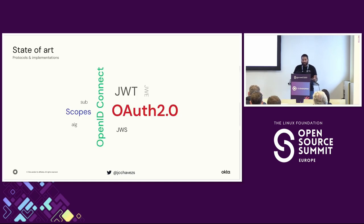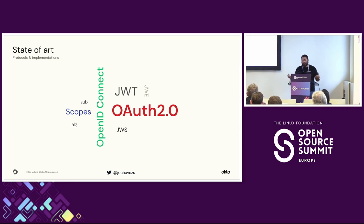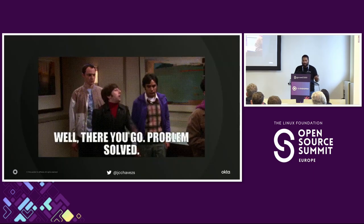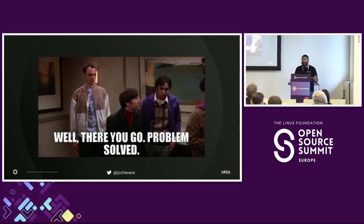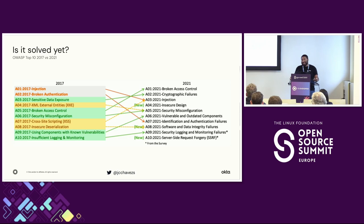We also have protocols and implementations that already solve this problem. We have OAuth2, OpenID Connect, JWT, scopes. If you want more security, you have encrypted JSON web tokens and signed ones. Pretty much all of this is well known. So the problem is already solved — why are we talking about this? Is it actually solved yet?